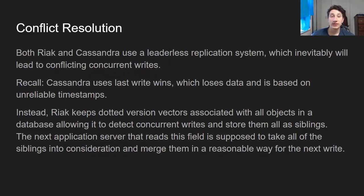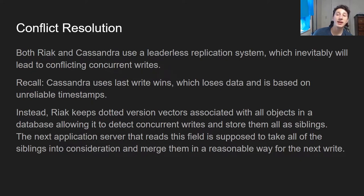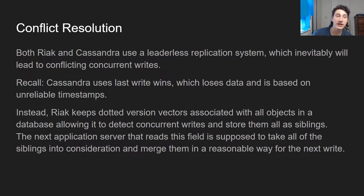Riak fixes this using something called version vectors, which I touched on earlier on the channel in the multi-leader replication video. Version vectors are a good way of keeping track of what a client knew about the database when they made a write. By doing so, you can track the dependencies of a write and see if two writes for the same object were causally related — meaning one was done knowing about the other — or if they were concurrent. If they're concurrent, you store them as siblings. Anyone reading from the database will then receive both siblings and can merge them in the application code.